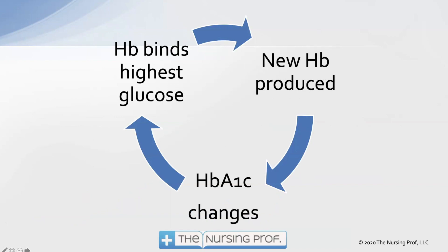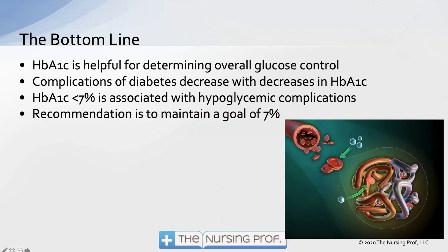Hemoglobin binds at the highest glucose concentration, but new hemoglobin is produced on a regular basis, which causes changes in hemoglobin A1c. Keep in mind that hemoglobin is not turning over fast — red blood cells turn over about every 180 days, so even though the process is continuously ongoing, it's not going to significantly change our hemoglobin A1c level overnight; it takes months. The bottom line is hemoglobin A1c is helpful for determining overall glucose control. Complications of diabetes decrease with decreases in hemoglobin A1c, so we want to see it coming down. The goal for diabetics is 7%, and levels less than 7 are often associated with hypoglycemic complications, so we want to be careful — though some diabetics can tolerate it, in general let's go for a goal of 7.